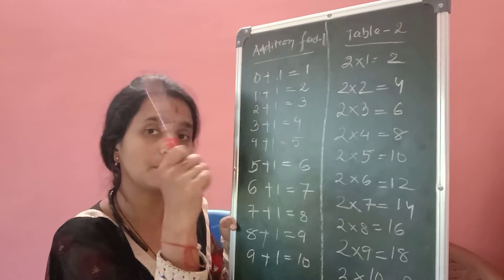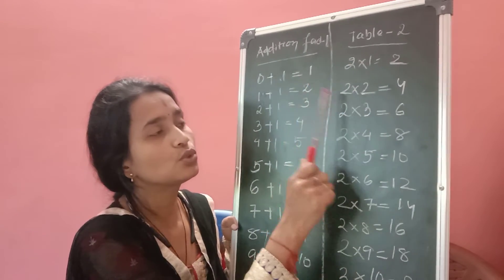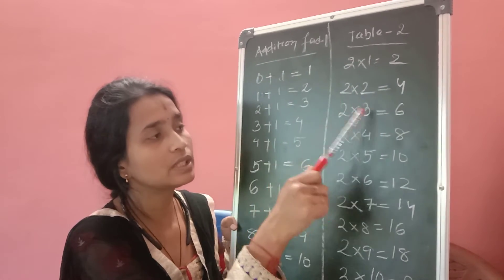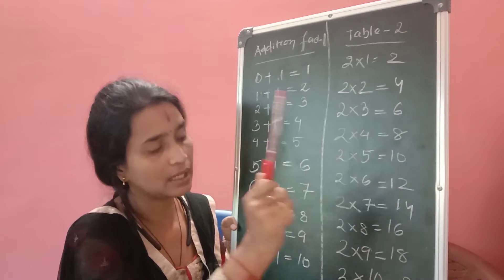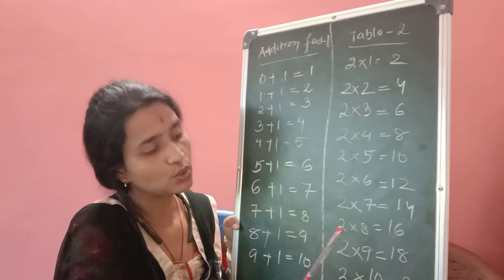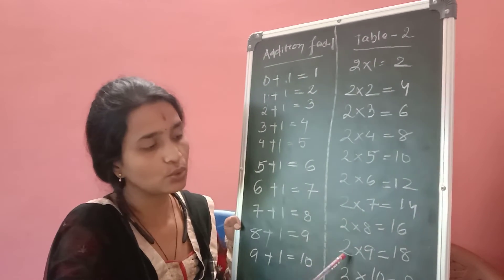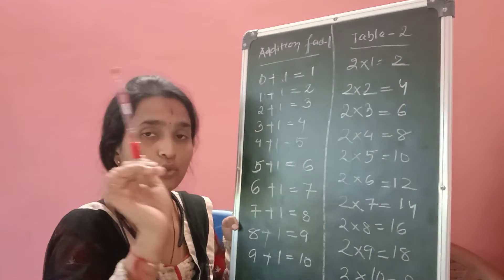Then come to table number two which I have taught in the previous video. 2×1=2, 2×2=4, 2×3=6, 2×4=8, 2×5=10, 2×6=12, 2×7=14, 2×8=16, 2×9=18, and 2×10=20. It was already taught and I have told you to send a feedback on this video.